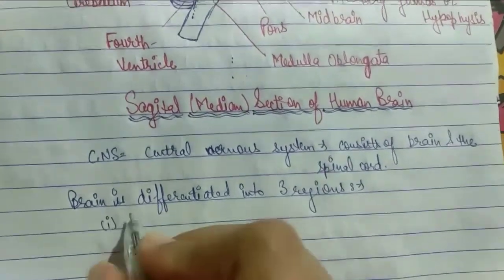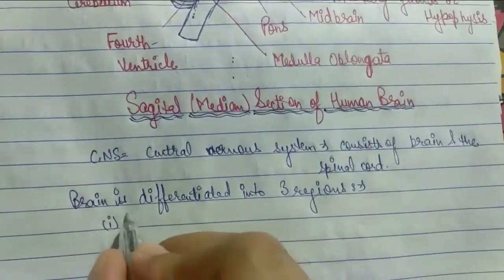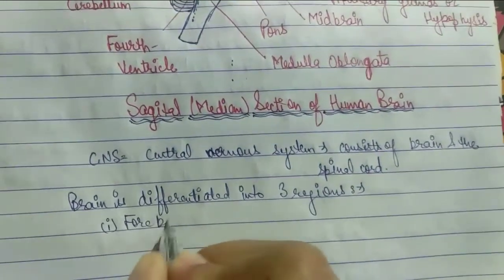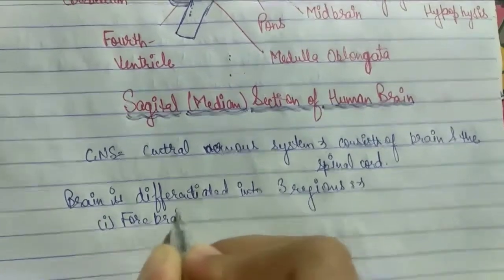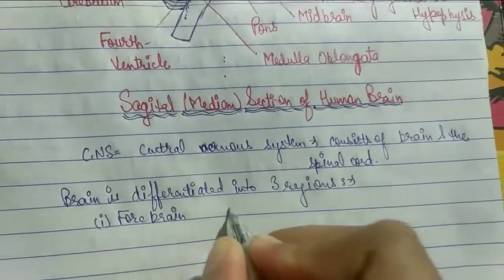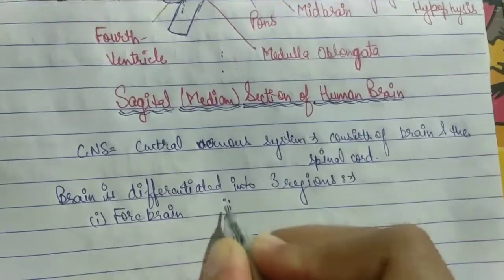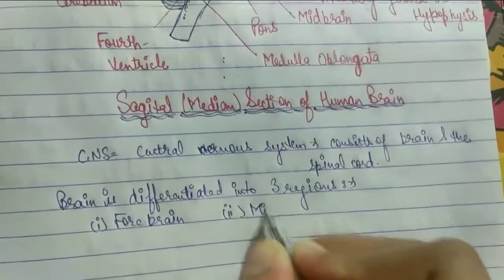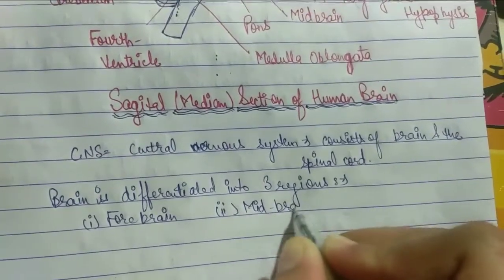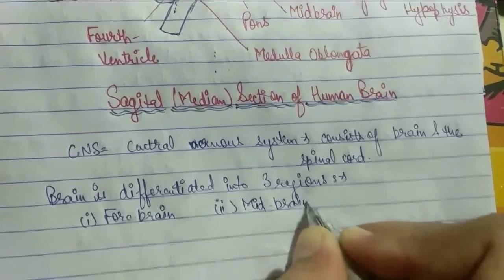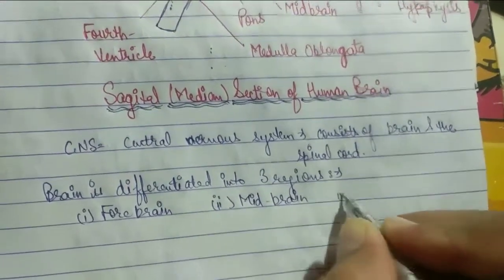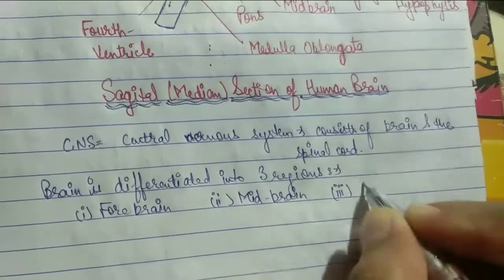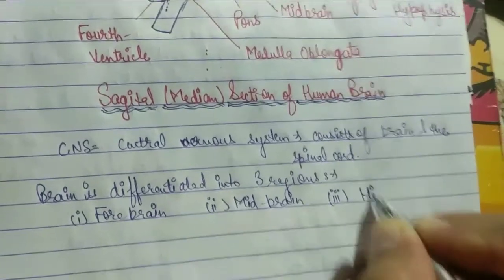First is the forebrain. Second is the midbrain. And third is the hindbrain.